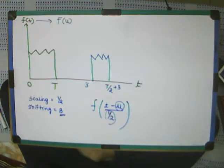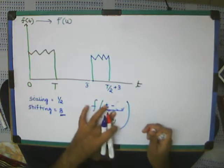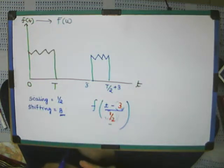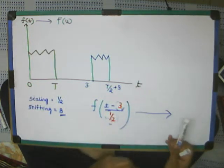So here, if I substitute this standard thing, then this is scaled by 1 by 2, and it is shifted by 3. So this is what will be the new function.